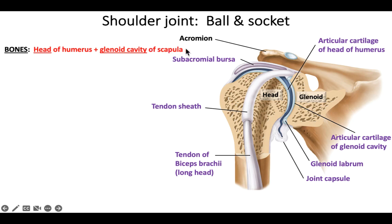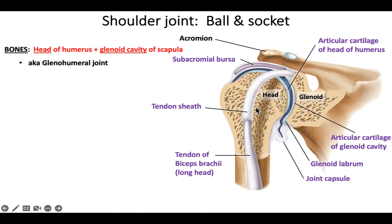Here we see the head of the humerus at the proximal end, and then the shallow glenoid cavity. That shallow glenoid cavity allows a lot of motion — if we had a really deep socket, that would restrict the amount of movement. So the shoulder joint has the largest range of motion. The glenoid is more like a fossa than a deep socket. It's also called the glenohumeral joint because it involves the glenoid and the humerus.